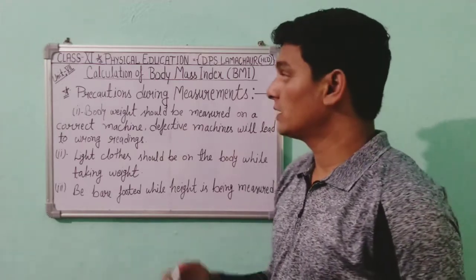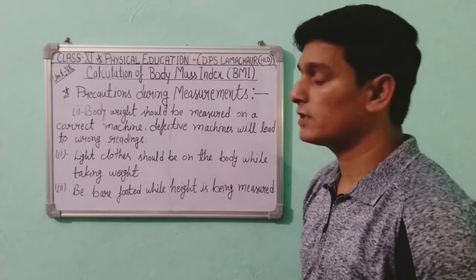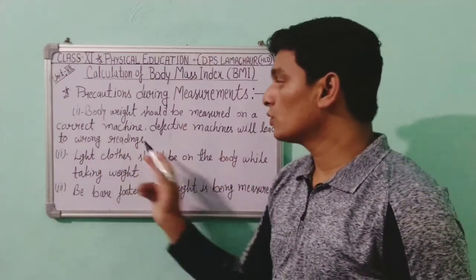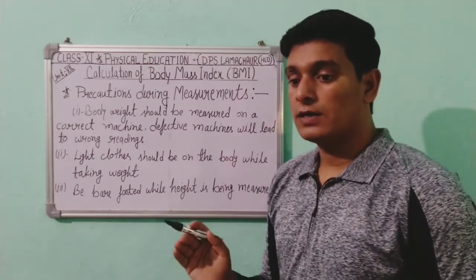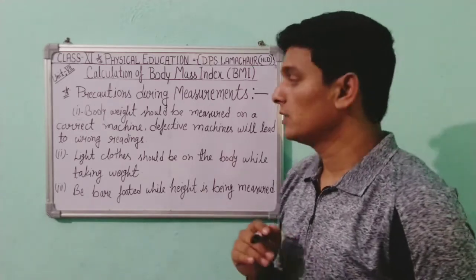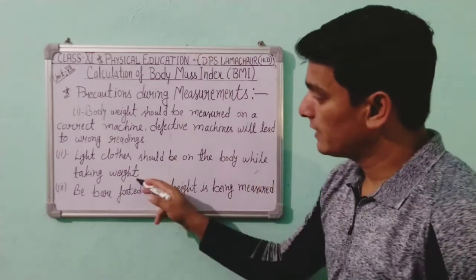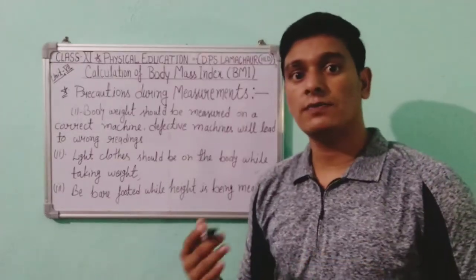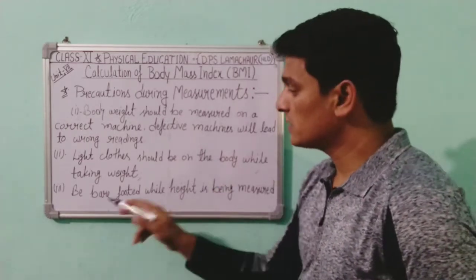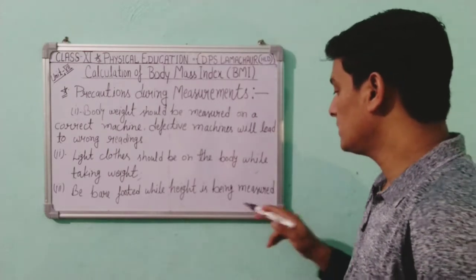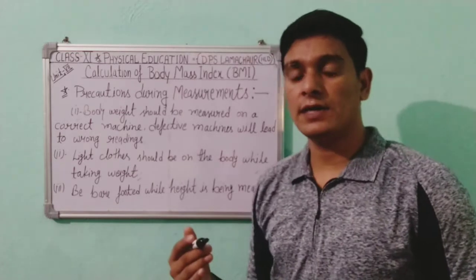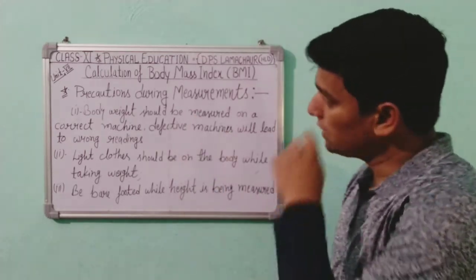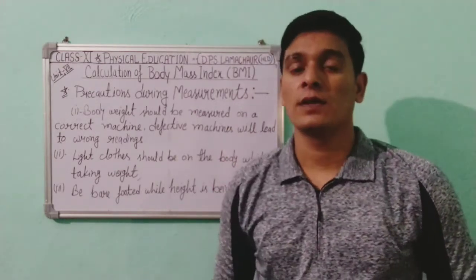Now let's discuss the precautions during measurement. First, body weight should be measured on a correct machine — a defective machine will lead to wrong readings. Second, light clothes should be worn while taking weight, as heavy clothes will add to the reading. Third, be barefooted while height is being measured, and your body should be straight.